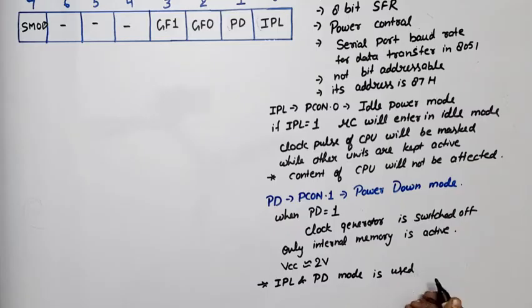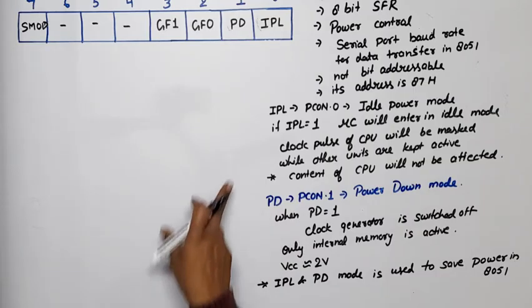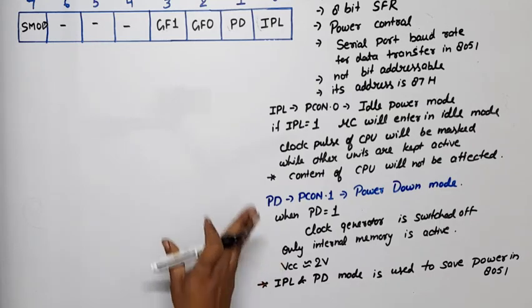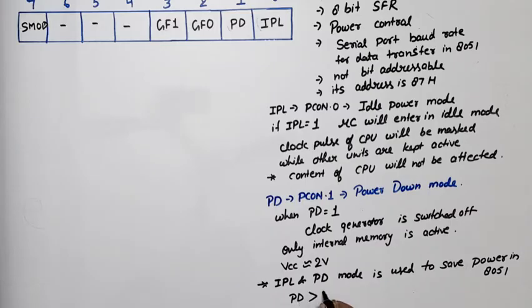Now it may also happen that which mode saves more power? So in this case only CPU was off. In this case all devices are off, so PD means power down mode will save more power in comparison to IPL means idle mode.